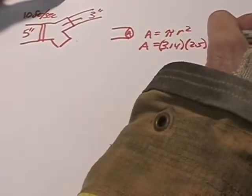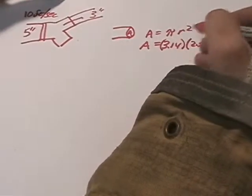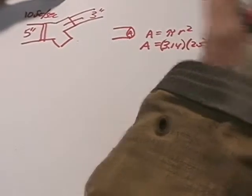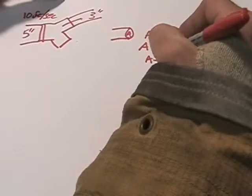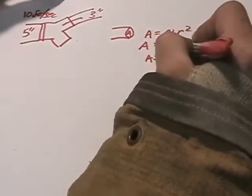But we're going to square that, so that means do it twice. If we multiply 3.14 times 2.5 times 2.5, we come up with an area of 19.63 square inches.